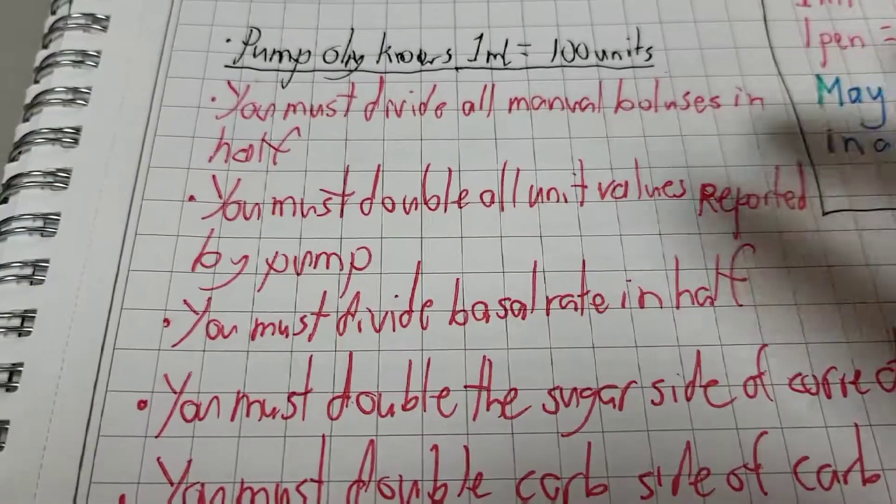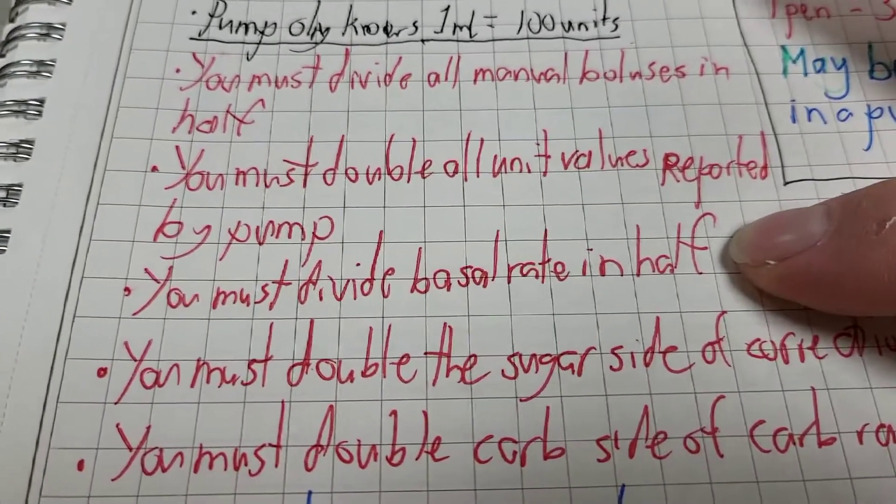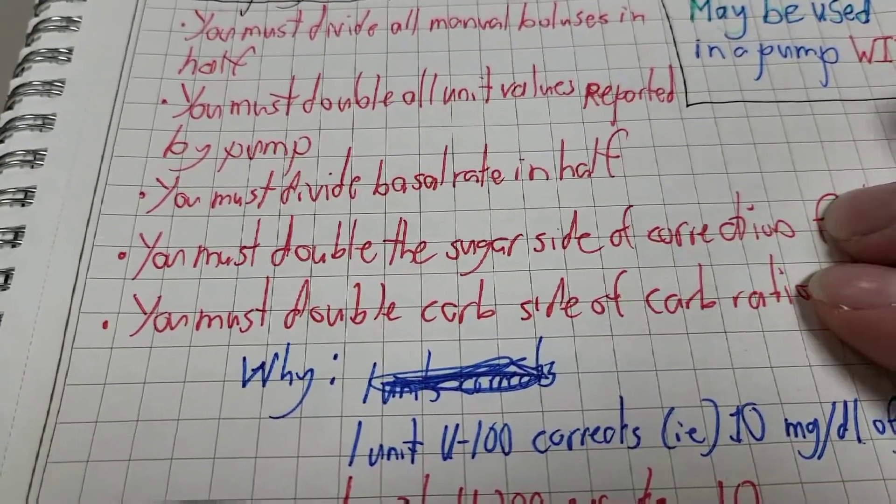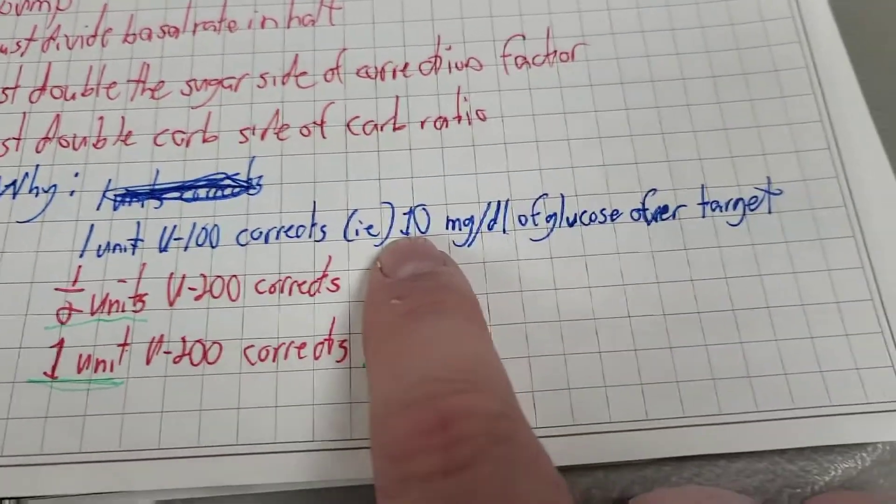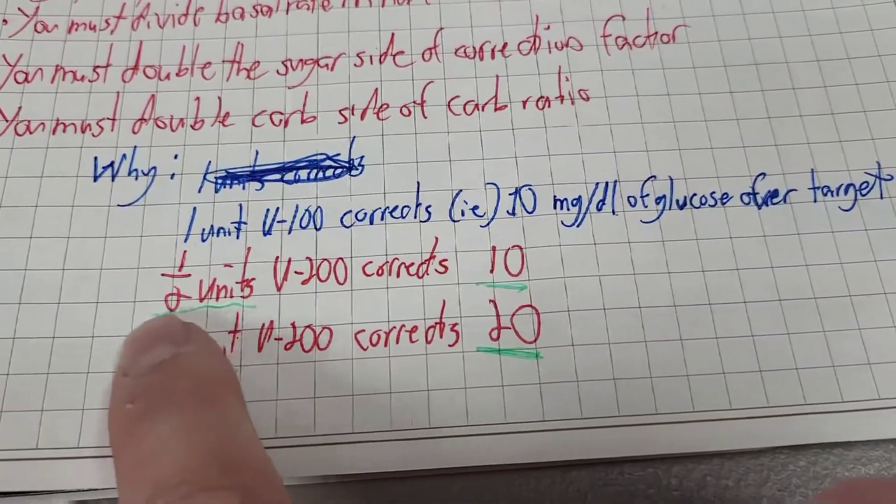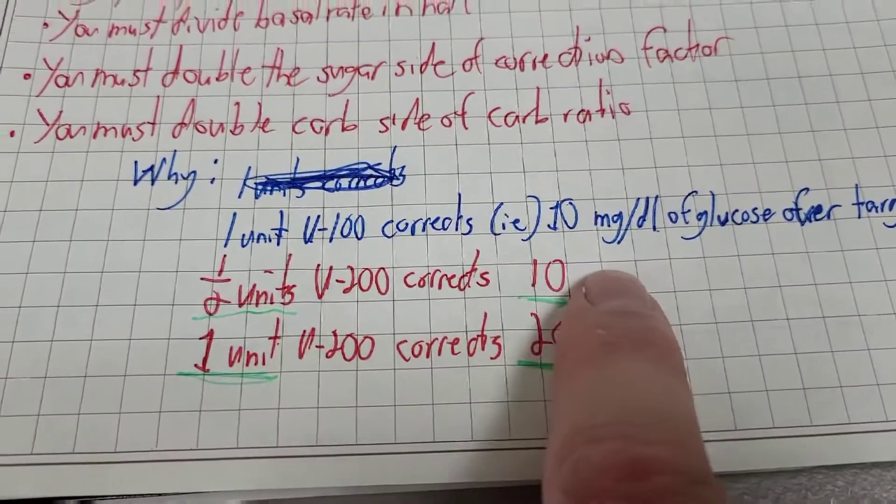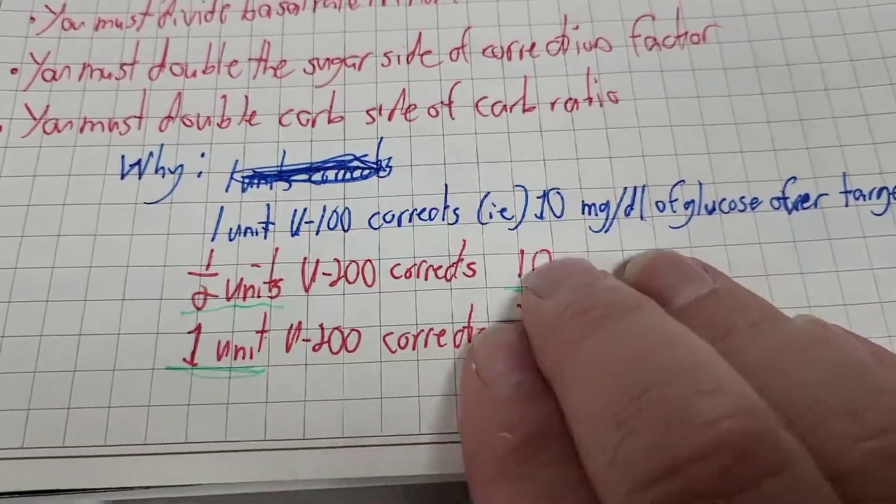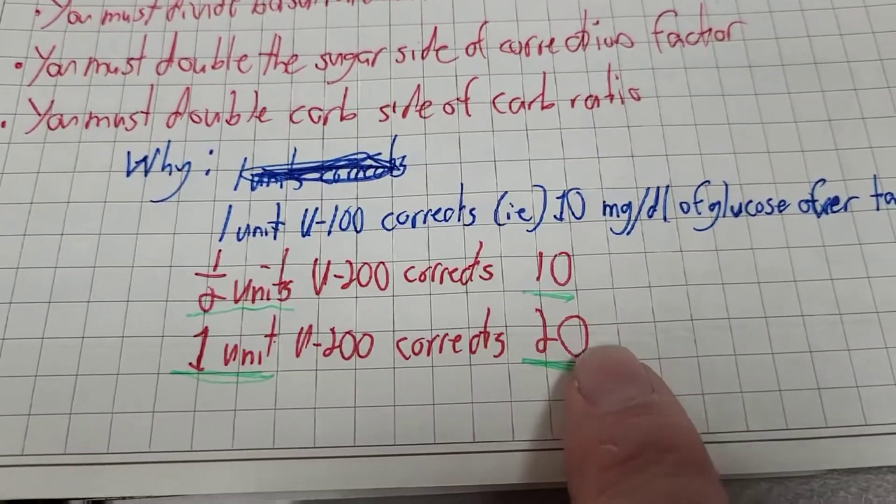Your basal rate, you need to divide that in half. The correction factor and the carb ratio have to be doubled. A 1 to 10 ratio, that is actually now one half unit corrects 10, but the ratios are always written in one to something. So one unit covers 20.